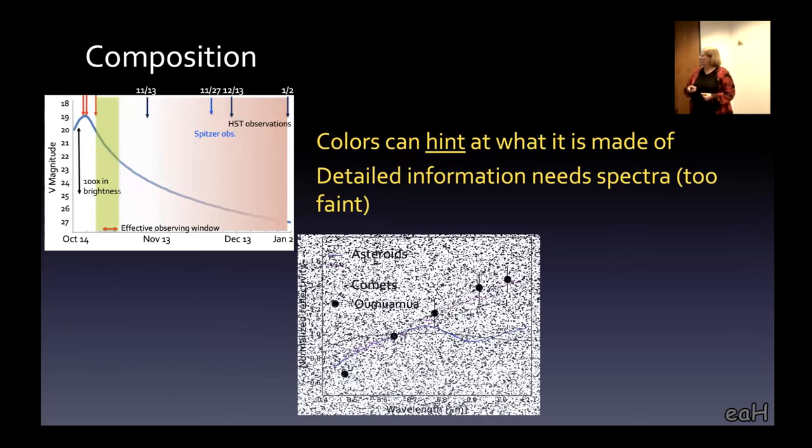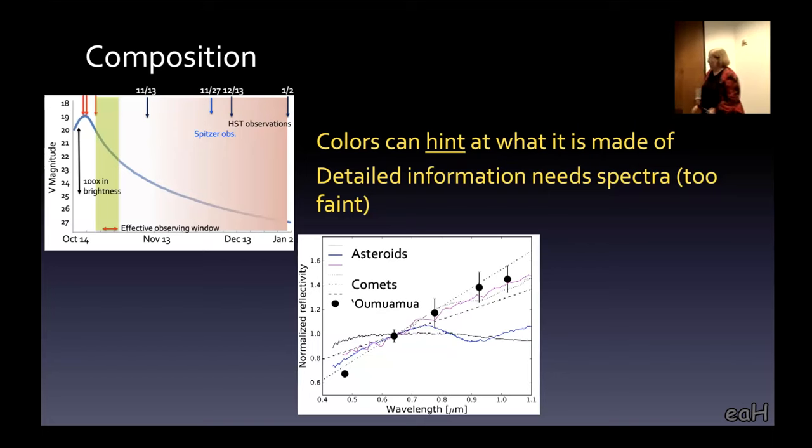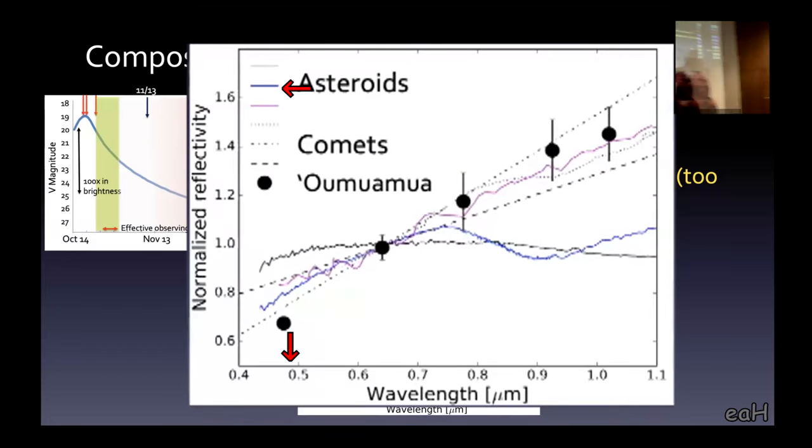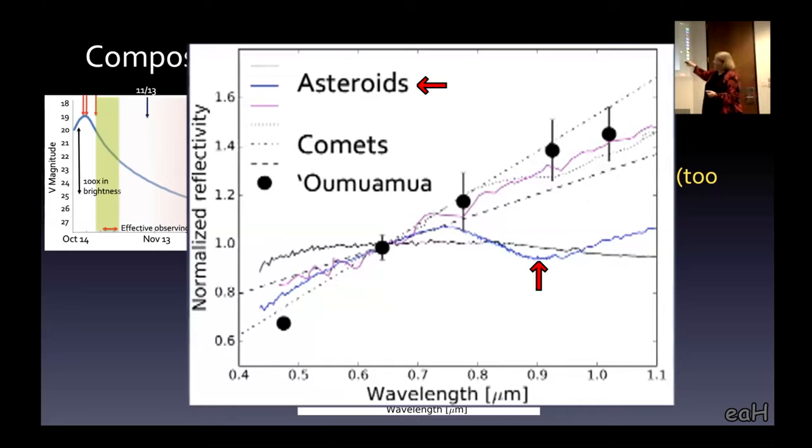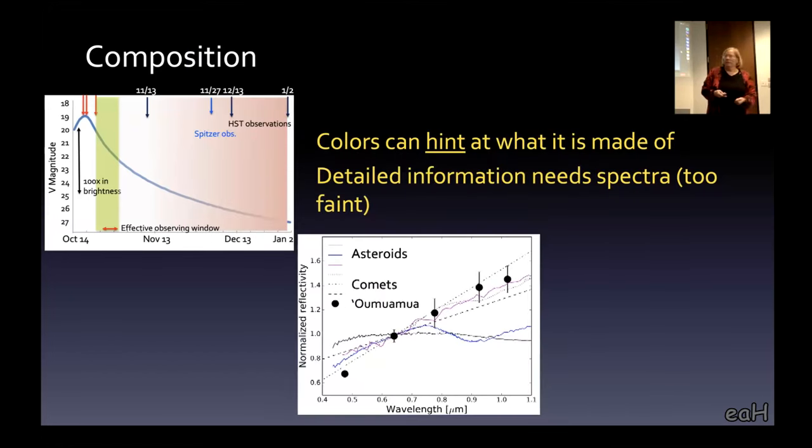Here's the results of looking at color filters. We're looking at blue to red in the visible wavelengths. The dots represent our measurements of 'Oumuamua. You can see as we're going from blue to red, it's getting brighter and brighter. Comets kind of follow the red curve that looks just like 'Oumuamua. This looks like a comet. It's red.